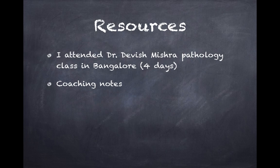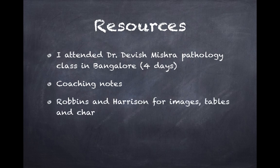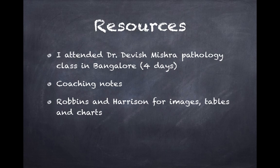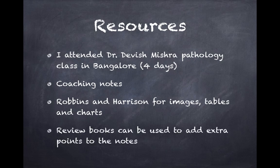If you've joined DAMS, Bhatia, PrepLadder, Marrow, or any other coaching, take those notes, read them, and add your points onto them — very useful. An important point regarding pathology preparation: keep Robbins beside you while going through notes on a particular topic. Open the corresponding chapter in Robbins and go through the images, microscopic findings, and what is written below them, as well as tables and charts, because questions more often come from those sections. Harrison is especially useful for systemic pathology images. Review MCQ books from UG can also be used, with extra points added to your notes.